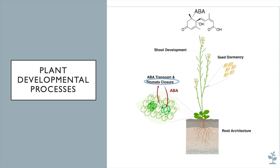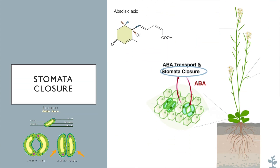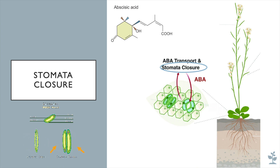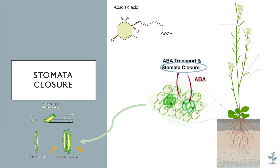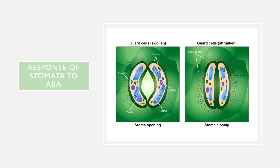Abscisic acid is also involved in the closure of stomata. As you may recall, stomata are pore-like structures in the epidermis of leaves and are made up of two specialized cells called guard cells. The opening and closing of stomata is determined by increases or decreases of solutes in these guard cells, which cause them to either take up or lose water. When there are low levels of ABA, the stoma is wide open. However, the stomata are closed when ABA is synthesized by plants. ABA is able to trigger the closure of these stomatal pores in response to drought conditions, which allows plants to avoid water loss through transpiration to the atmosphere.